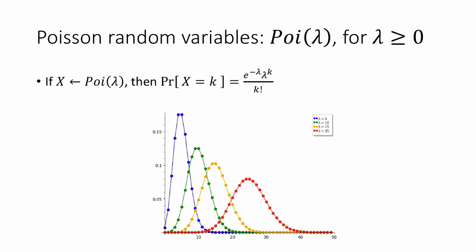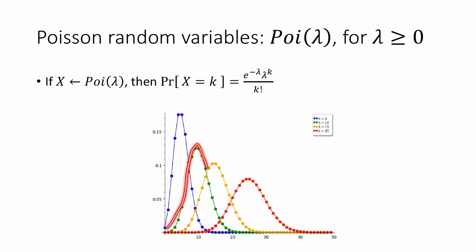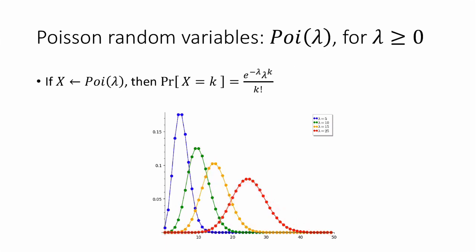To give you a sense of what this distribution looks like, here I've plotted the Poisson distribution for various values of lambda: lambda equals 5, lambda equals 10, lambda equals 15, and lambda equals 25. You can see that as lambda gets larger, the distribution kind of gets smushed to the right. If these curves look kind of familiar, there's a reason.